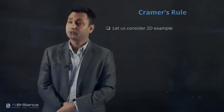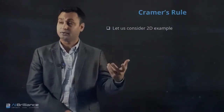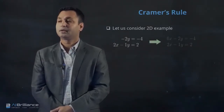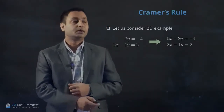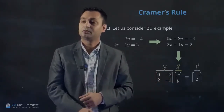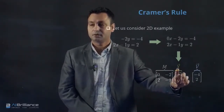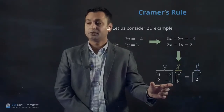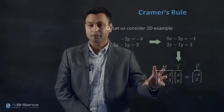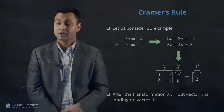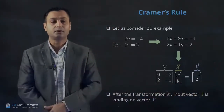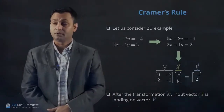Let's consider a 2D example because it would be easier to depict and geometrically understand. We have two equations in two variables. The coefficient gives us a matrix-vector multiplication form equal to the known vector V. In this equation, X represents the unknown vector, M represents the transformation matrix, and V is the known vector. After transformation by M, the input vector X gets converted and lands on vector V.